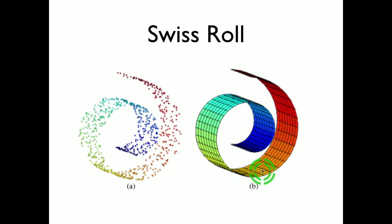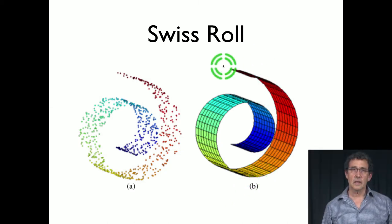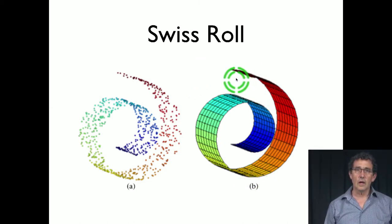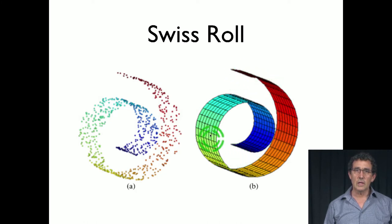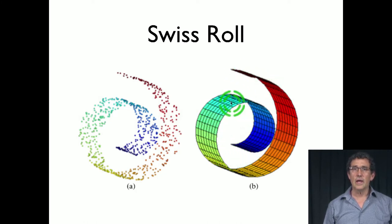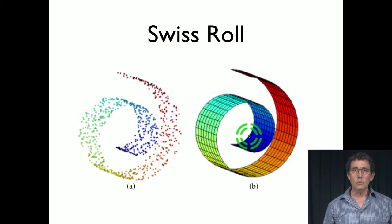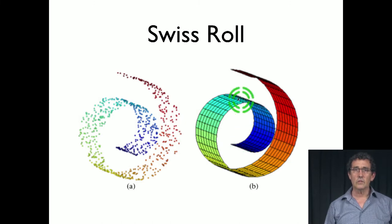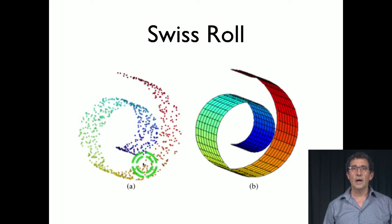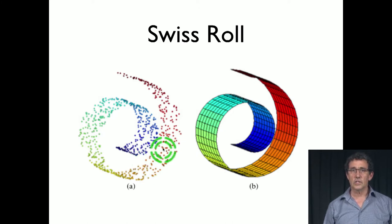Here is a second example. This is a synthetic example called the Swiss roll, where we basically take a two-dimensional strip and we bend it so that it forms a shape in three dimensions. And now we want to see if the math will allow us to unbend it, or at least to identify that the dimension of this data set sampled from this Swiss roll, here is the data set, is indeed just two.